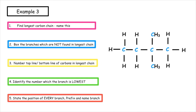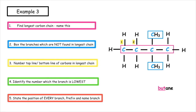This one is a little bit trickier. We find the longest carbon chain, which is four carbons, so the name is butane. We put boxes around the branches not found in the longest chain - this time we have two different branches. We number the top and bottom carbons in opposite directions. The positions could be three or two; the lowest position is two, so both branches are on position two. We state every branch position: two, two. Since there are two branches, we use the prefix di, and they are one carbon each, so the name is 2,2-dimethylbutane.